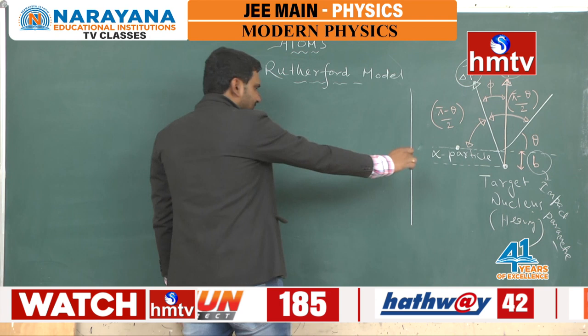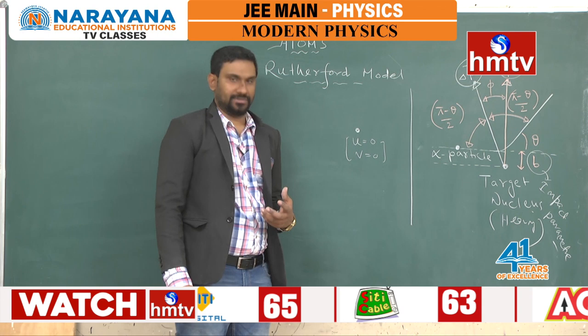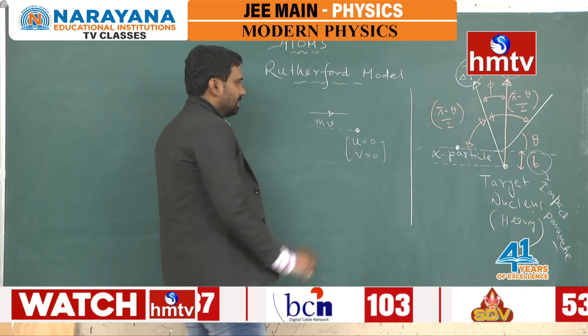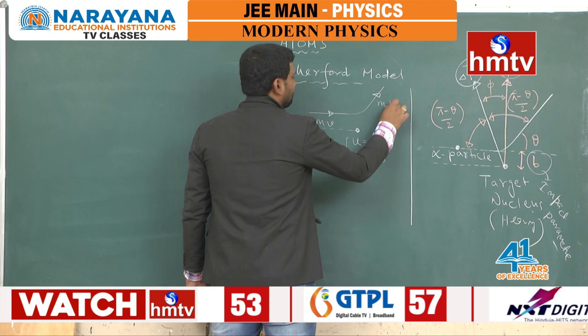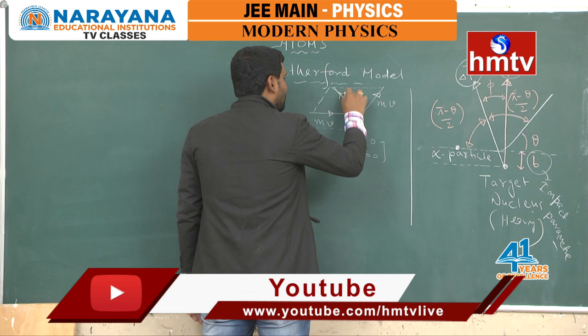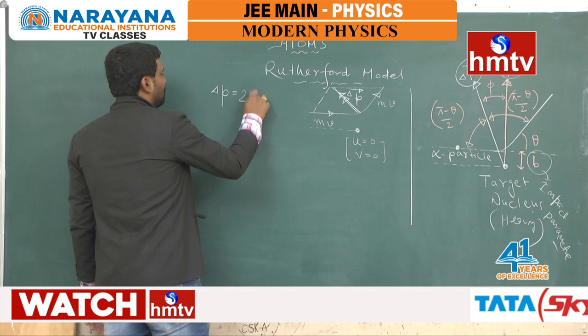Since the nucleus is very heavy, its initial and final velocity is zero — it is undisturbed by the alpha particle's movement. When the alpha particle approaches, it carries momentum MV. It flies away also carrying the same magnitude of momentum, but the direction changes. Completing the vector diagram, the momentum change delta P equals 2MV sine(θ/2).